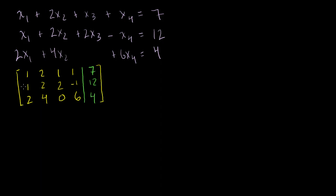Just by position we know which columns correspond to x1, x2, x3, and x4 — this really just saves us from having to write those variables every time. We can essentially do the same operations on this matrix that we would have done on the original equations: replace any equation with that equation times some scalar plus another equation, divide or multiply an equation by a scalar, subtract them from each other, or swap them.